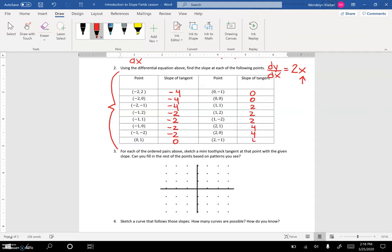Now that we have a table of values, let's graph these values. But remember, we're graphing slopes. We're going to sketch a little mini toothpick tangent at each point. If I have a curve and I want to graph the slope at that point, remember we draw a little tangent line at that point to represent the slope. That's what we're going to do here—just graph little tangent lines at each ordered pair.